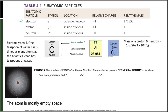Electrons are located outside of the nucleus and have a charge of negative one. Protons are inside the nucleus and have a charge of positive one. Neutrons are also inside the nucleus and have no charge — they're zero. Looking at relative mass, protons and neutrons each have a mass of one, so they have equivalent mass. The electron is so small that it would take 1836 electrons to have the mass of one proton or one neutron, so we count electron mass as negligible.